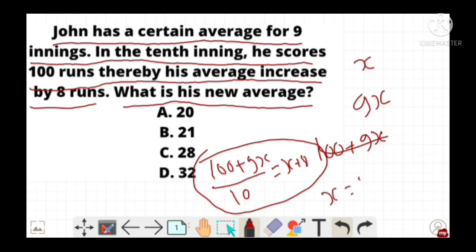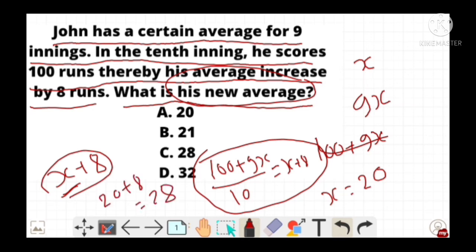We need to determine his new average, which means we need to determine the value of X + 8. On substituting the value of X in this expression, we get 20 + 8, which equals 28, and option C is the correct answer for this question.